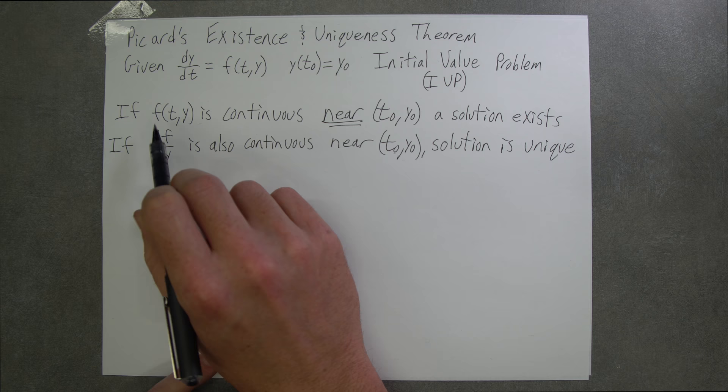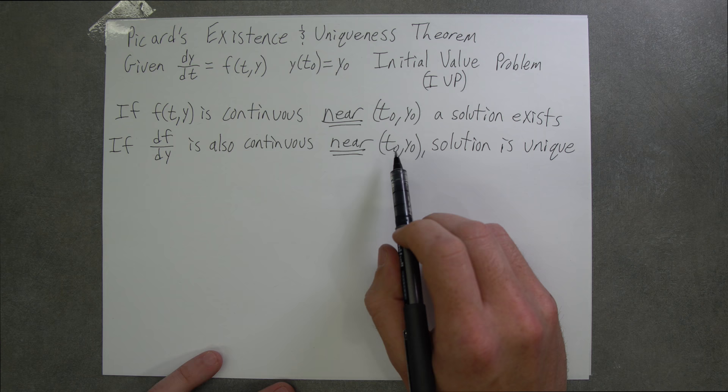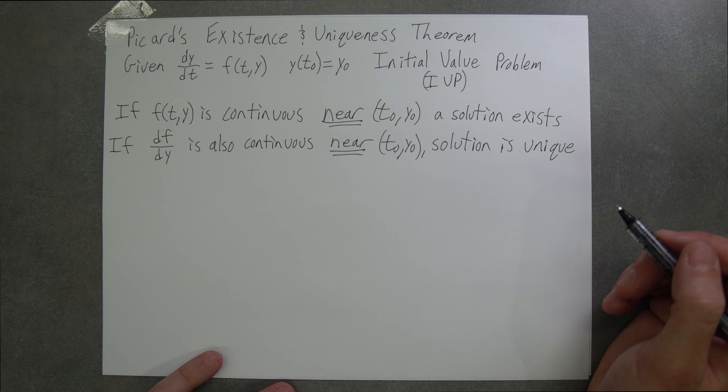Furthermore, if the partial derivative with respect to y of f(t,y) is also continuous near our initial condition (t0, y0), the solution is unique.